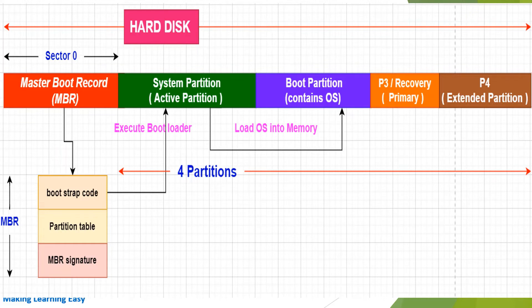So this MBR is not part of any partition, and you can see it is present at the beginning of the hard disk at location 001, meaning sector 1 — the first sector of the hard disk. What it contains: you can see bootstrap code, partition table, and MBR signature.